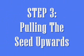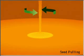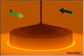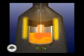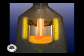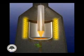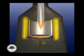Step 3: Pulling the Seed Upwards. The seed crystal is extracted from the molten silicon pool, and the rod is pulled upward and rotated at the same time. The rod and the crucible rotate in opposite directions to minimize the effects of convection in the melt. The temperature gradient, pulling rate, and rotation speed all influence the size of the single crystal. As the seed crystal is slowly raised upward, the molten silicon solidifies in the same crystalline structure as the seed.